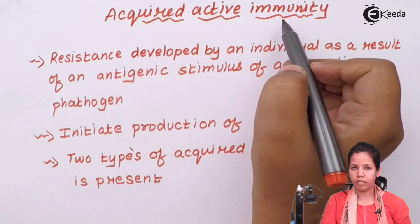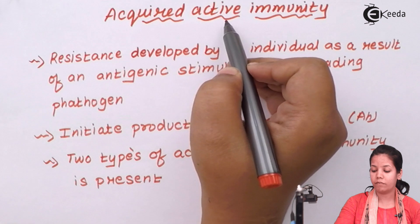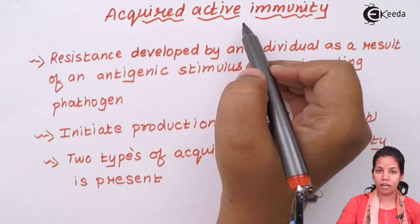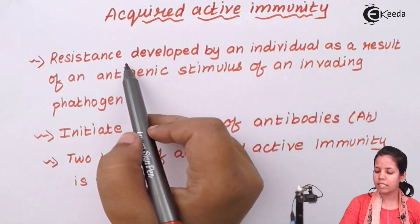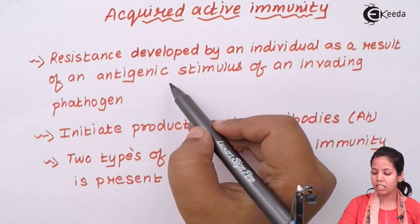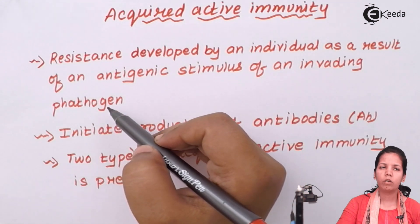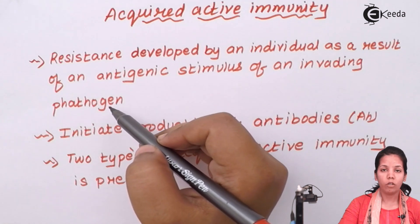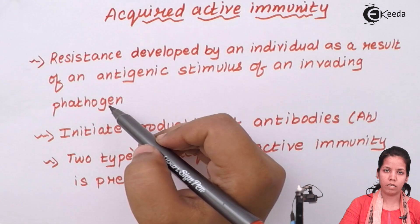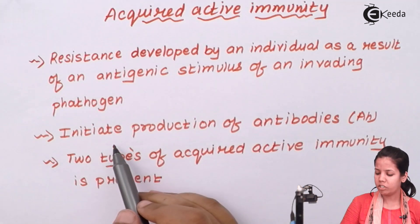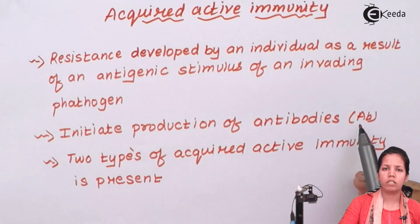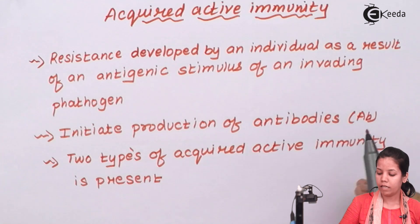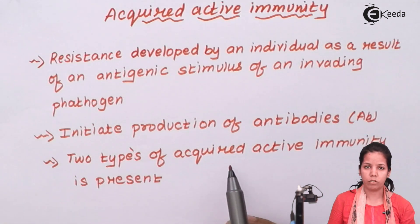Acquired active immunity — acquired means you have received it, active means it is sudden or to the point and does not rely on any other immune cell. It is the resistance developed by an individual as a result of antigenic stimulus of an invading pathogen. For example, a food infection allows an organism with its antigenicity to invade your body, and your body responds by initiating the production of antibodies. Antibodies catch hold of the antigen of the organism and try to kill it. There are two types of acquired active immunity.